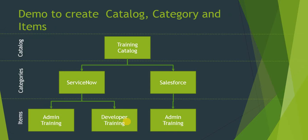Next is the demo where we will create a new catalog called 'Training Catalog'. Under that catalog we will create two categories: 'ServiceNow' and 'Salesforce'. Under the ServiceNow category we will create 'Admin Training' and 'Developer Training' catalog items, and under Salesforce we will create only 'Admin Training'. Let's jump to ServiceNow as an admin and create these catalog items, categories, and catalog.